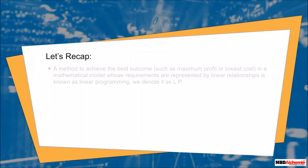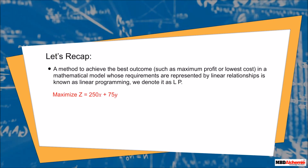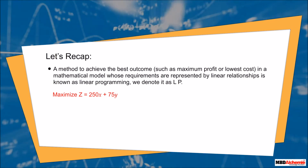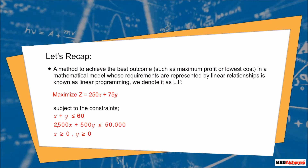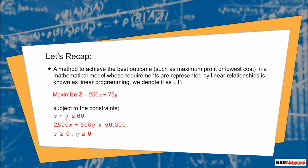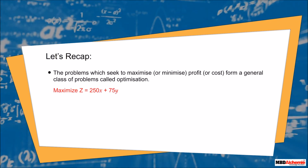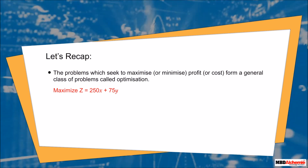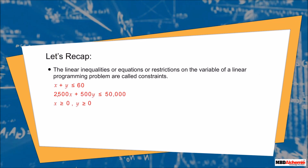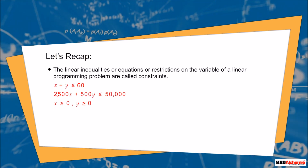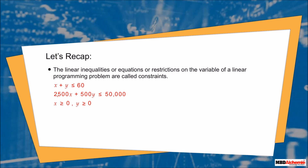Let's recap. A method to achieve the best outcome — such as maximum profit or lowest cost — in a mathematical model whose requirements are represented by linear relationships is known as linear programming, denoted as LP. The problems which seek to maximize or minimize profit or cost form a general class of problems called optimization. The linear inequalities, equations, or restrictions on the variables of a linear programming problem are called constraints.